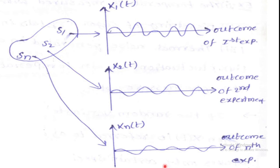Next, we are going to discuss about the difference between a random variable and a random process. In this figure, we can clearly understand the difference. For a random variable, the outcome of an experiment is mapped into a number — that is, a real number. Whereas for a random process, the outcome of the experiment is mapped into a waveform that is a function of time. Here S1, S2, S3, ..., SN are the sample points of the random experiment. For a random variable, outcomes are mapped into numbers; for a random process, outcomes are mapped into waveforms.